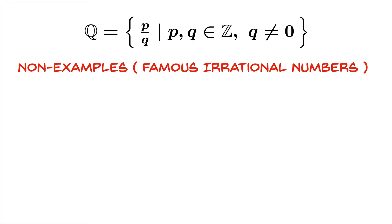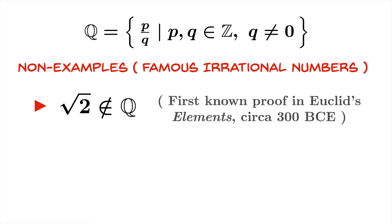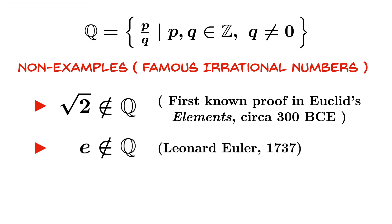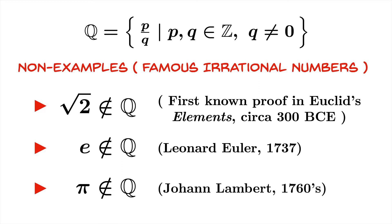There are non-examples of rational numbers — famous irrational numbers. The square root of 2 is not rational; this has been known since ancient times, with the first known proof in Euclid's Elements circa 300 BCE. The number e is not rational — Euler proved this in 1737. And π is not rational, with a proof appearing in the work of Johann Lambert in the 1760s.